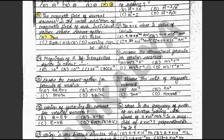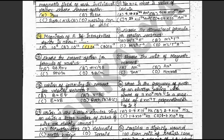Question 24: The magnitude of B of interstellar space is about dash. The answer is C: 10 raised to minus 12. This is on textbook page 135. Question 25: Choose the correct option for the formula of radius. The answer is B: MV upon QB. This is on textbook page 138.